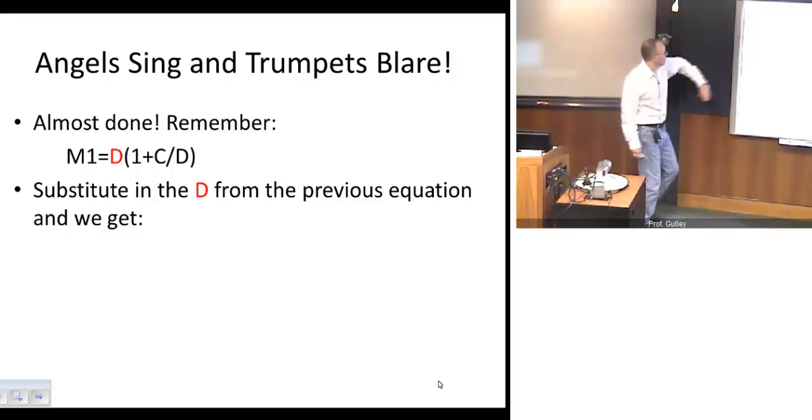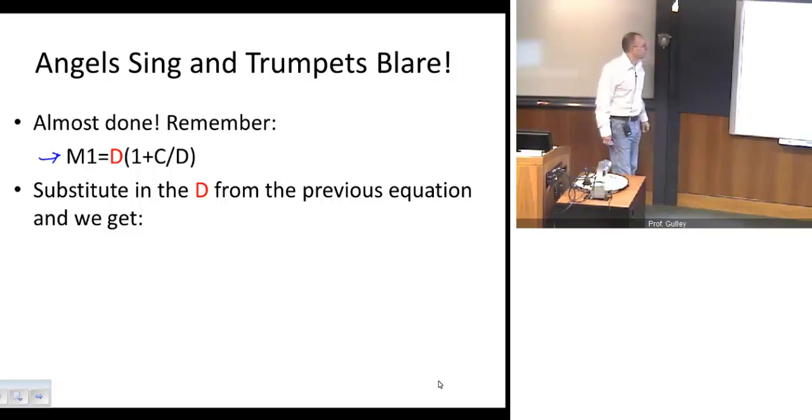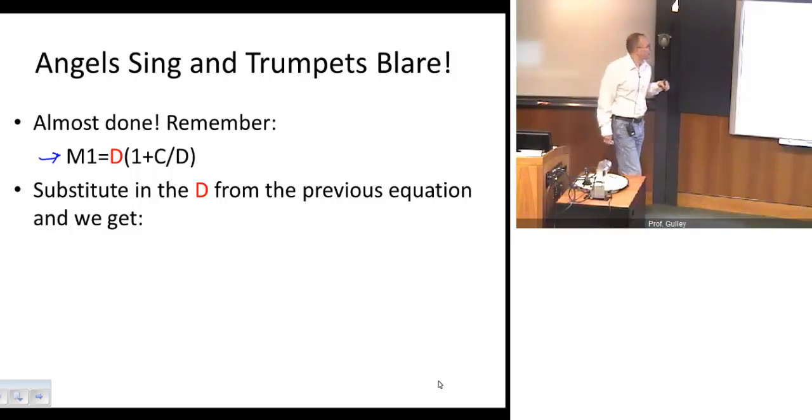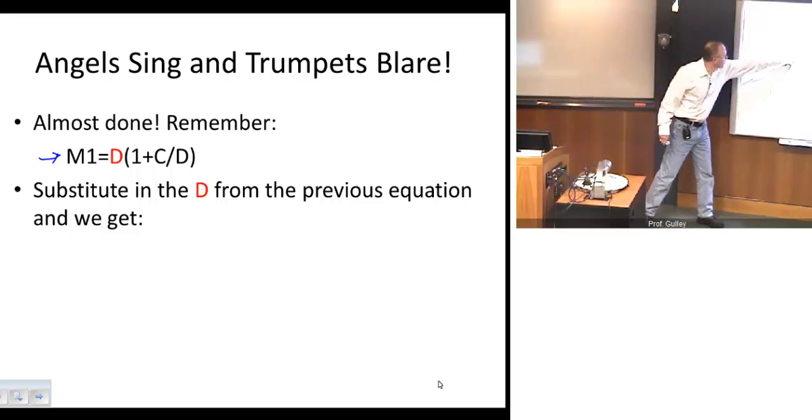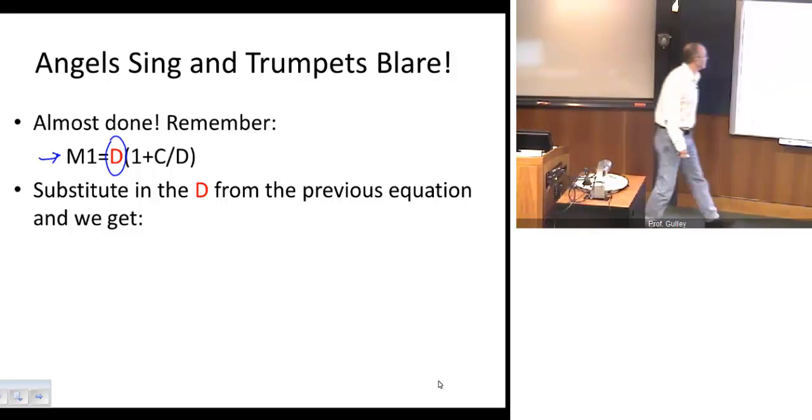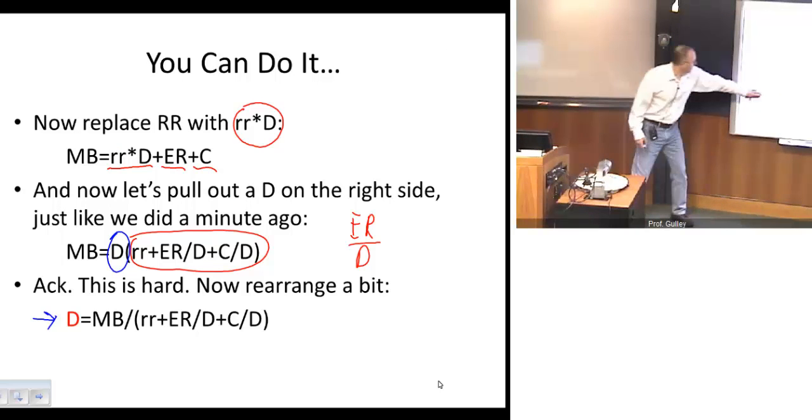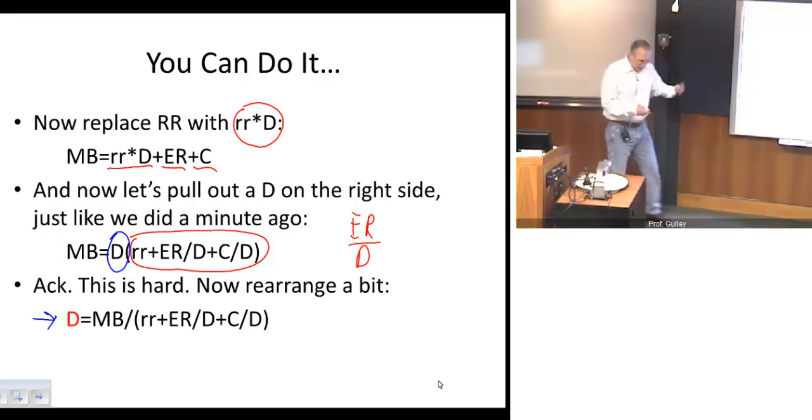So now the angels are singing and the trumps are blaring. All we have to do is go back to this equation that we came up with earlier. Remember, all we did is start with the definition of the M1 money supply, and we rearranged or remaneuvered the right side by just a little bit. So now we substitute out for that, and we substitute in this equation right here, and then we're all done.